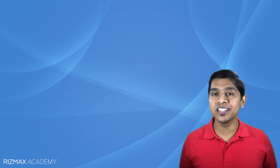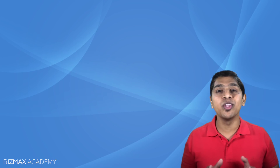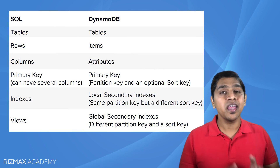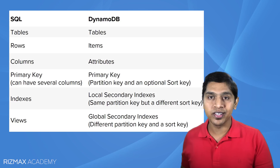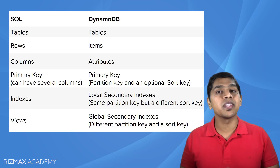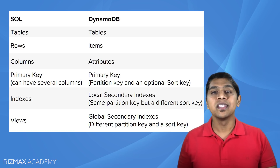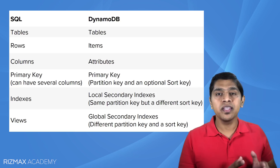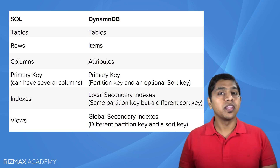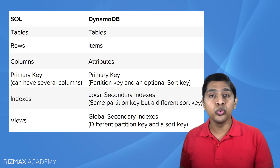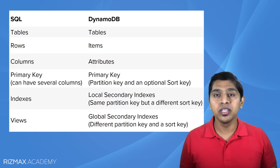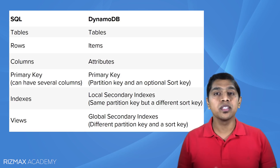Before we get into hands-on exercises, let's quickly compare SQL and NoSQL terminology. In SQL, we have tables, and in DynamoDB, we have tables as well. SQL tables have rows and columns, while DynamoDB tables have items and attributes. SQL tables have a primary key that can have several columns, whereas DynamoDB tables have a primary key that can have minimum one and maximum two attributes — a mandatory partition key and an optional sort key.